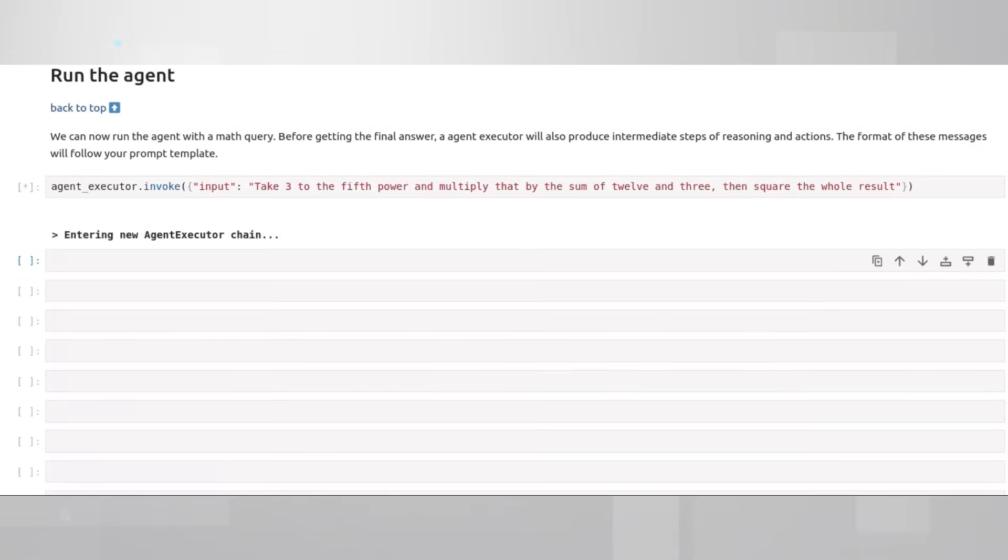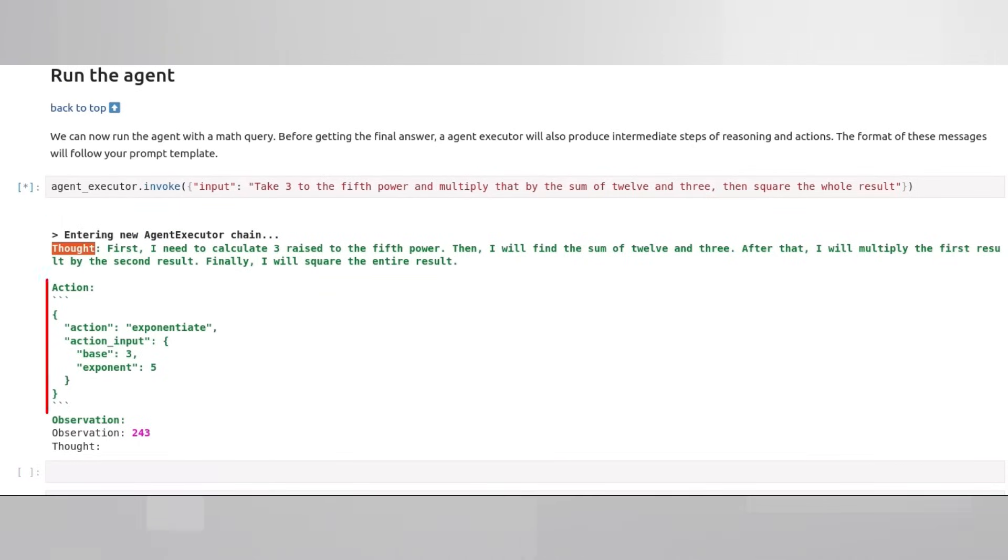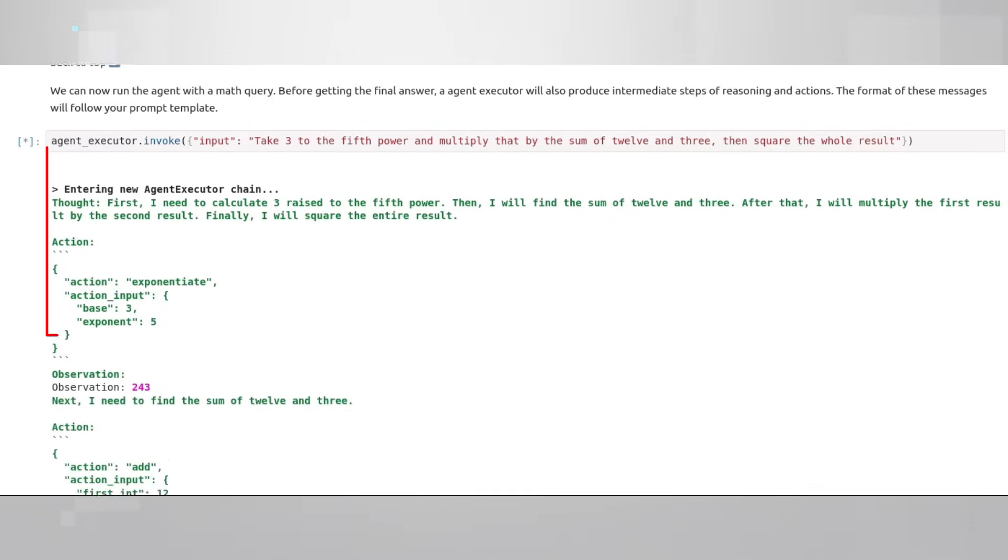Now, let's see how the agent is handling the problem it's been given step by step. First thought is the entire process, step by step. First calculate, then calculate that. And here is the first action. Use the exponentiate tool to calculate 3 to the power of 5. And we even got a result.